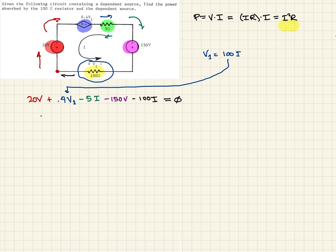We can rewrite this. It's 20 plus, now we substitute this in, it's going to be 0.4 times 100 I. Then it's minus 5 I, minus 150, and then minus 100 I. That all has to equal zero.